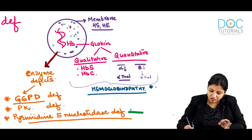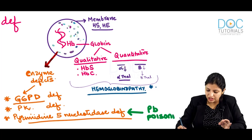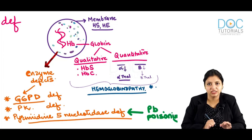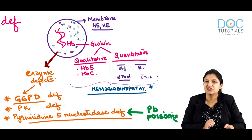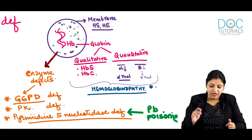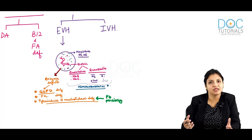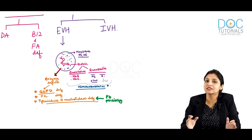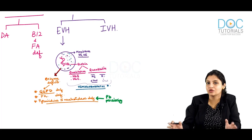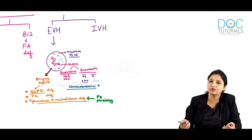Lead poisoning usually causes pyrimidine-5-nucleotidase deficiency — it is very rare and usually occurs due to lead poisoning. All these defects — membrane, globin, and enzyme — because they are defects in the red cell itself, they usually cause lysis of the red cells in the spleen, causing extravascular hemolysis.